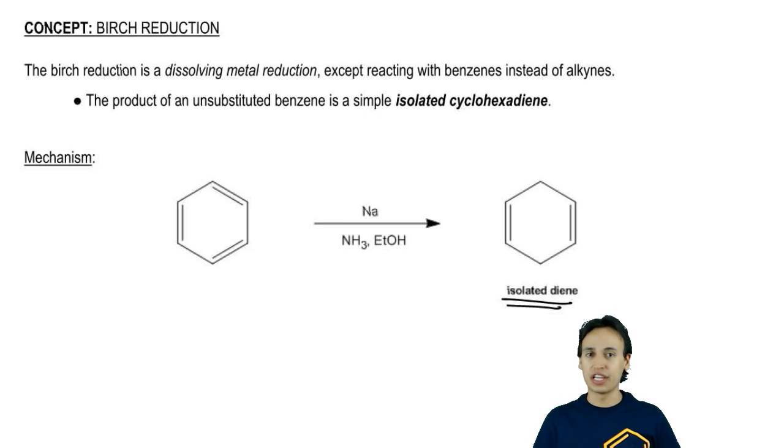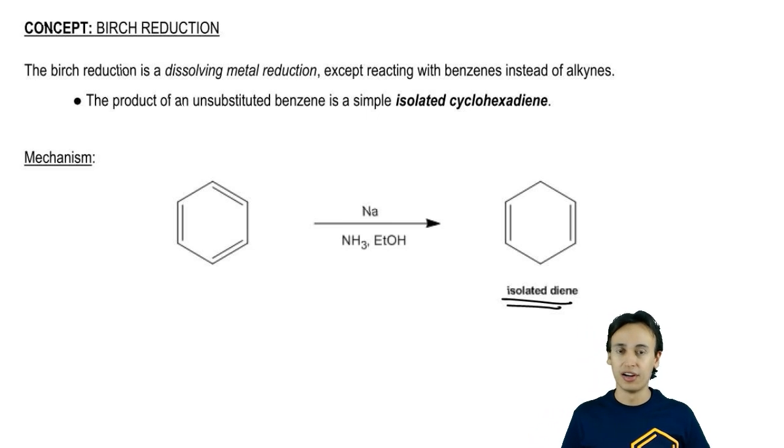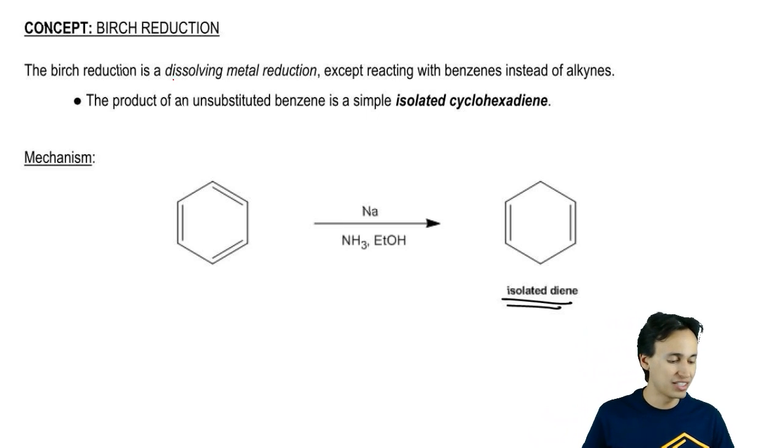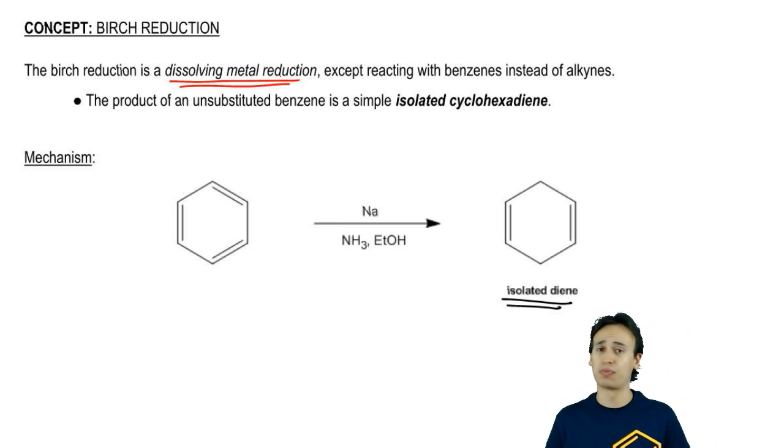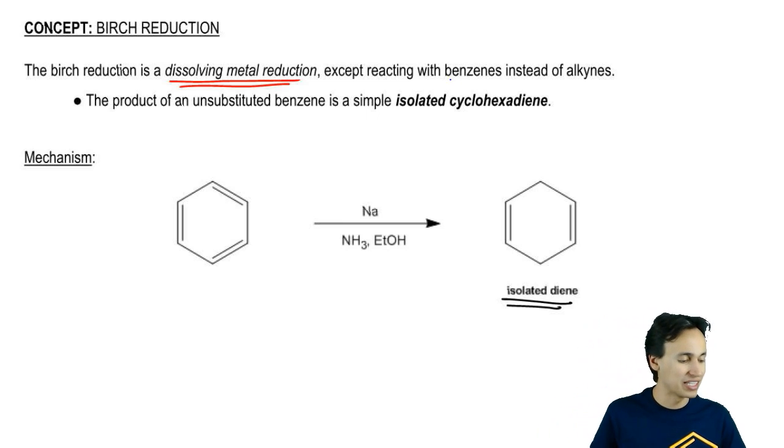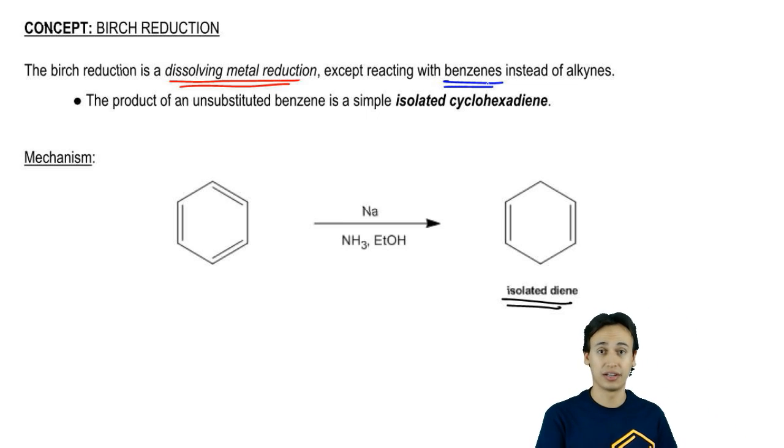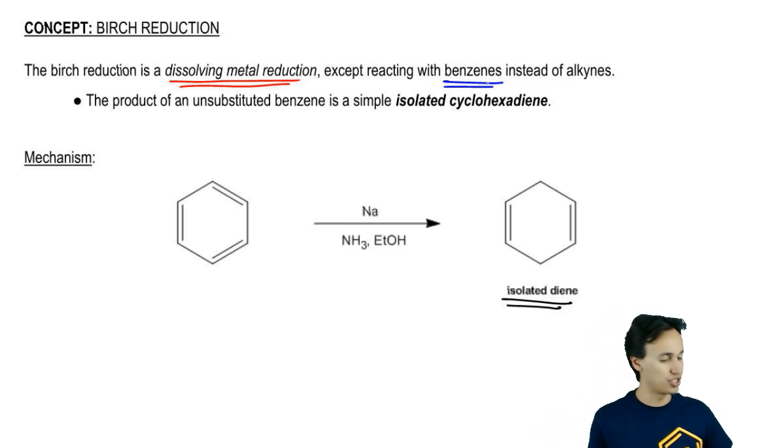If you take a closer look at these reagents, they might look familiar because these are very similar to the reagents that we use on a dissolving metal reduction. This is a reaction from Orgo-1 that we learned a long time ago that worked with alkynes and it was a radical mediated mechanism. Well, it turns out that this mechanism is really the same exact mechanism except it's going to work with benzene instead of with an alkyne. Let's get right into it.